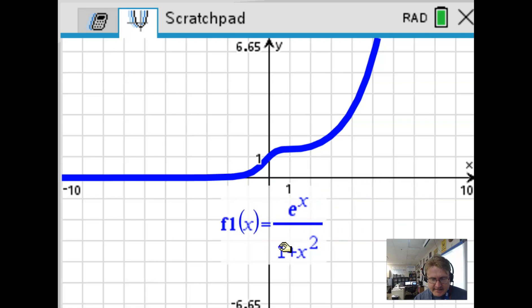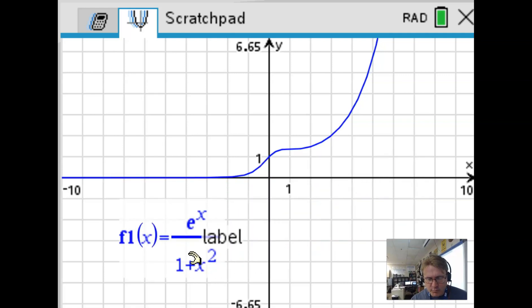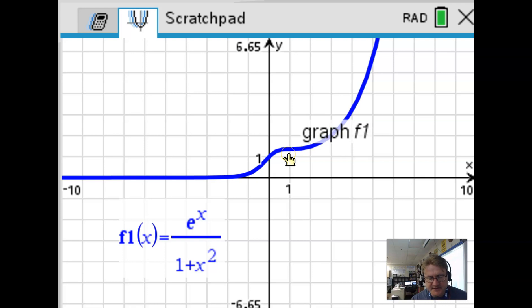And what do we notice about this graph? Well, we're really concerned, we're really interested in what's happening at the point where x is 1. And right about here, we notice that we have this very special tangent line that should have a slope of 0. And I think that's what's happening. And in fact, if I do a little alteration to this particular graph, it needs to be in a document setting instead of a scratchpad.